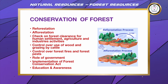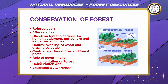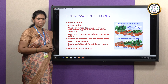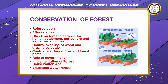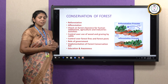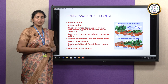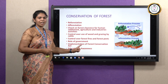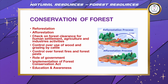Control over forest fires and forest pests — though it sometimes happens naturally, we should always monitor and implement preventive measures. The role of government is very essential; government has the major authority and power to implement many actions successfully. Implementation of the Forest Conservation Act — this act came into existence in 1980, got amended, and has been implemented, but still we need to follow it throughout. Education and awareness — as facilitators, teachers, and students, we should bring out education and awareness to the public about our natural resources, how to conserve them, and how to avoid all negative impacts.